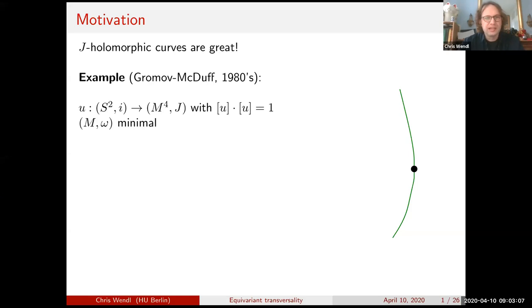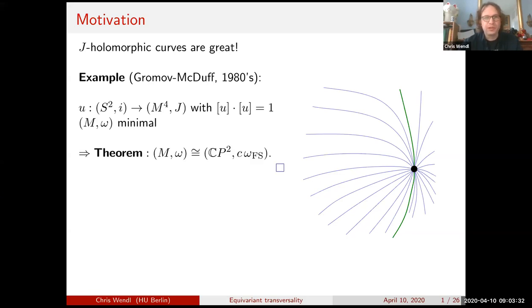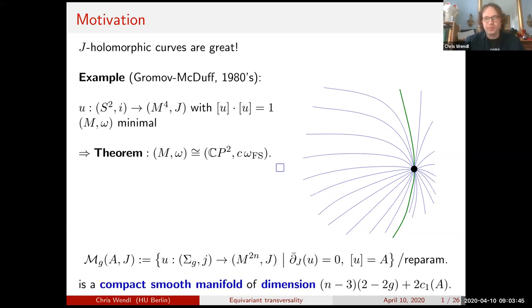You can turn that into a J-holomorphic sphere, then construct a moduli space out of that. Adding a constraint so you look at curves through some fixed point gives a two-dimensional space, and the curves spread out filling up space in your unknown manifold. By the time you prove everything about that moduli space, you find the unknown manifold must be CP² and its symplectic structure must be proportional to the standard Fubini-Study form. This argument is based fundamentally on the analytical fact that the moduli space of J-holomorphic curves with genus d in a given homology class, modulo reparametrization, is a compact smooth manifold of a dimension coming from the Riemann-Roch formula.